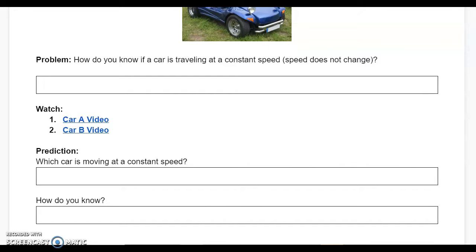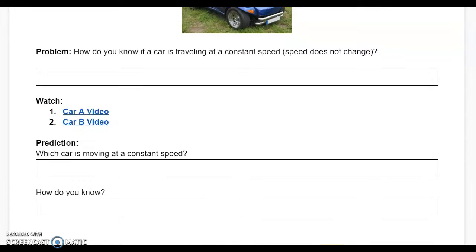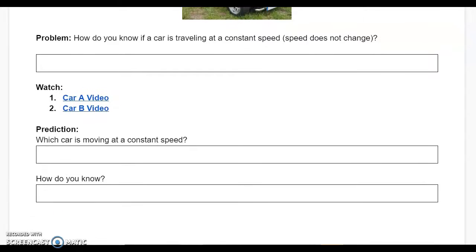Next, you'll move on to watch the videos for car A and car B. You will then answer the two prediction questions: which car is moving at a constant speed, and you'll be telling us how you know.